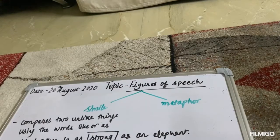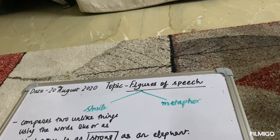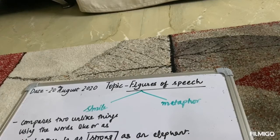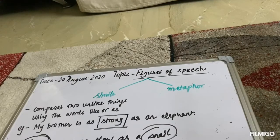The next example could be 'John moves as slow as a snail.' Here again we have two unlike things: John and a snail. The common thing between these two is that they both move slowly.